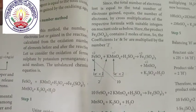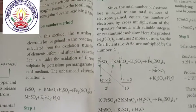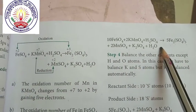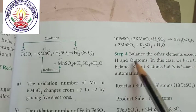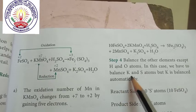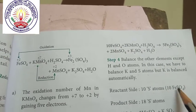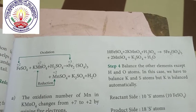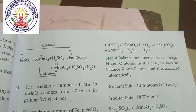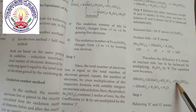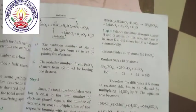Step 3: Balance the oxidized and reduced reactants and products. Based on the reactant side, balance the products. The equation becomes: 10 FeSO₄ + 2 KMnO₄ + H₂SO₄ → 5 Fe₂(SO₄)₃ + 2 MnSO₄ + K₂SO₄ + H₂O. Step 4: Balance elements other than hydrogen and oxygen. Balance potassium and sulfur atoms — potassium balances automatically. On the reactant side there are 10 sulfur atoms from FeSO₄, and on the product side there are 18 sulfur atoms (15 + 2 + 1). The difference is balanced by multiplying H₂SO₄ by 8, giving: 10 FeSO₄ + 2 KMnO₄ + 8 H₂SO₄ → 5 Fe₂(SO₄)₃ + 2 MnSO₄ + K₂SO₄ + H₂O.